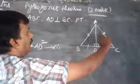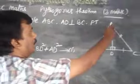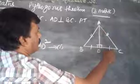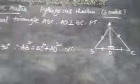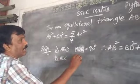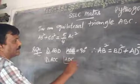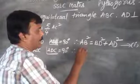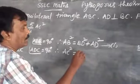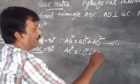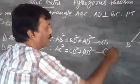Similarly, in right angle triangle ADC, by the Pythagorean theorem, the hypotenuse square is equal to the sum of the squares on the other two sides. Therefore AC square is equal to CD square plus AD square. This is equation number 2.